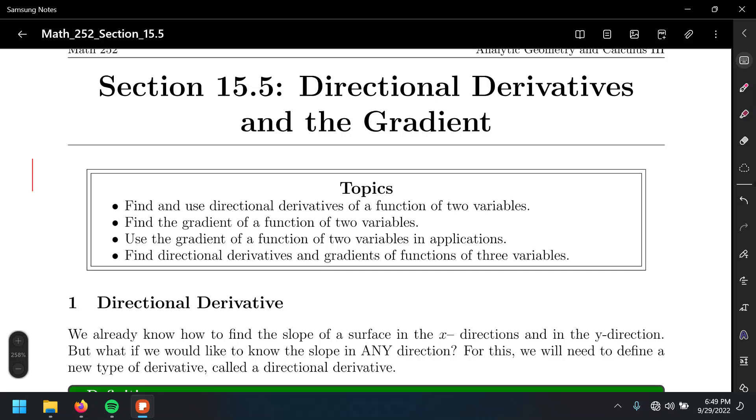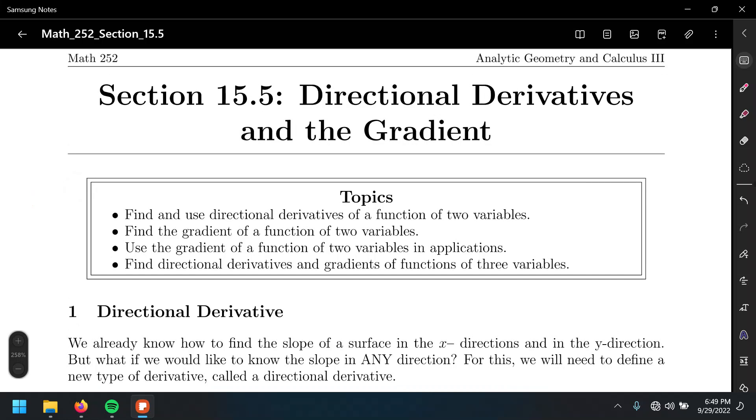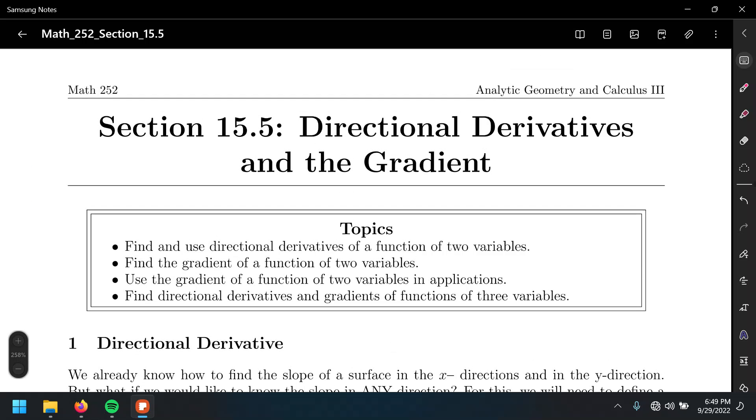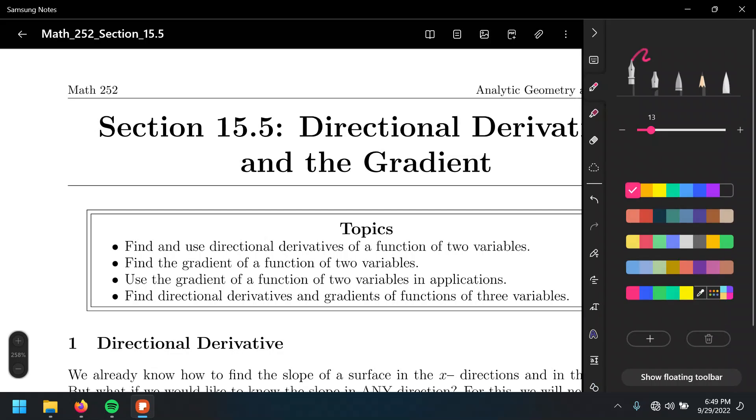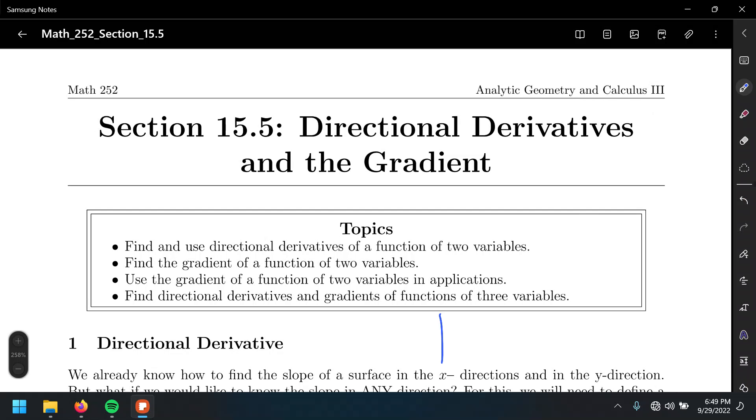What do we know so far? When we find a partial derivative, let's look at the two variable case. We're finding the partial derivative with respect to x. This is the rate of change in the direction of x. So that's how much the function changes in this case with respect to x. And the other partial derivative, the partial derivative with respect to y, that gives us the derivative in the direction of y.